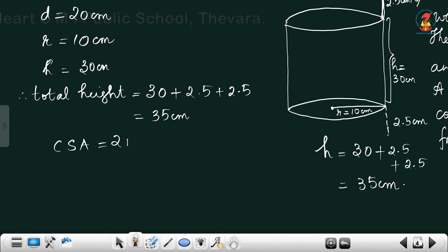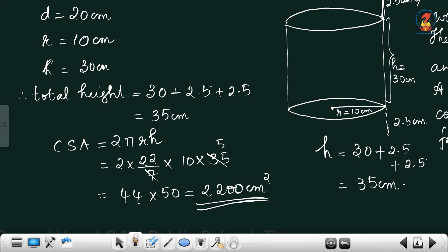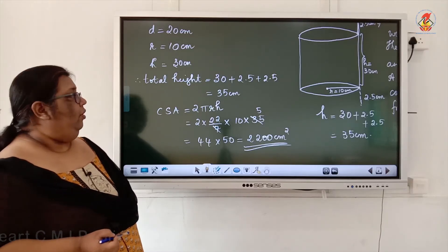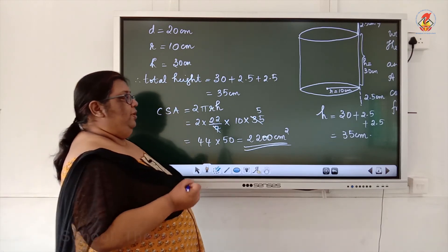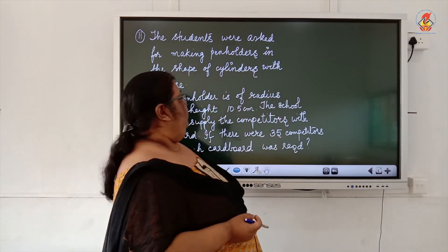Area of cloth required = CSA = 2πrh = 2 × (22/7) × 10 × 35. Since 7 goes into 35 five times: 2 × 22 × 10 × 5 = 44 × 50 = 2200 centimeter square. So 2200 cm² of cloth is required. When solving such problems, read carefully, draw the figure, and then attempt.